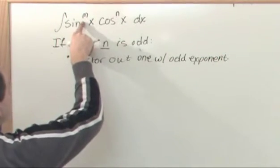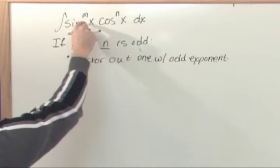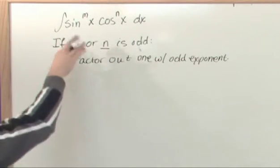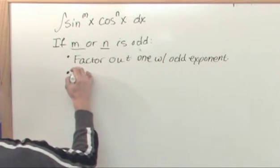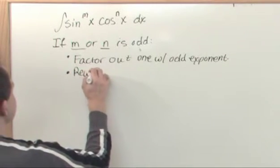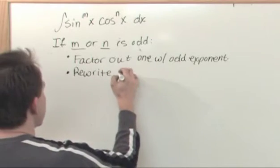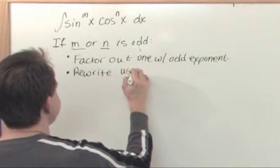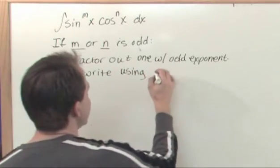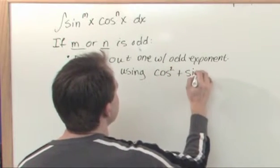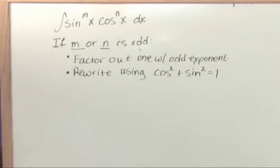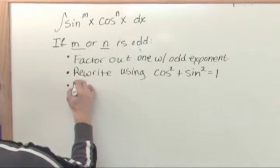So if this guy is odd, if this is sine cubed, he's odd, so you'll factor out one of the sines, leaving sine squared, so you'll factor him out. You'll factor the one that's odd out. You'll rewrite the function using the famous identity that you guys all know, cosine squared plus sine squared is equal to one. You'll rewrite using that, and then you'll use substitution.